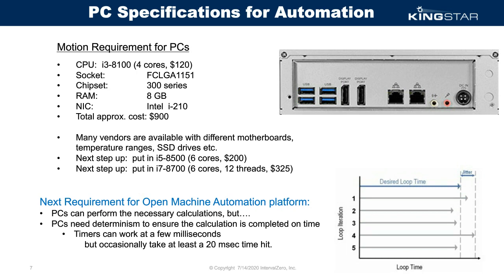The key upgrade path is simple: open the spring lever on the socket, pull out the i3, and drop in an i5-8500 with six cores for $200, or an i7-8700 with six cores and 12 threads via hyper-threading for $325. Many Windows programs benefit from more threads. In real-time, we only need one core, which is more than enough.